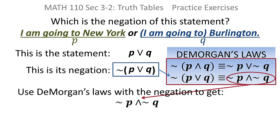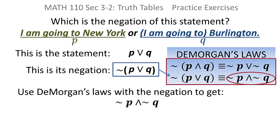So now we just have to negate statement P: 'I am going to New York' becomes 'I am not going to New York.' And then we negate Q: 'I am not going to Burlington.' And the or changes to an and.